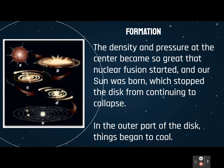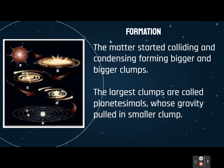When that happened, it stopped the disk from continuing to collapse, because it was creating energy that pushed back out. The outer part of the disk started to cool down and calm down. As it did, matter started colliding and condensing to make bigger and bigger clumps of matter. The larger clumps of matter were called planetesimals, and because they were big enough, they actually had gravity, so they started pulling smaller clumps into them, and those planetesimals got bigger and bigger.